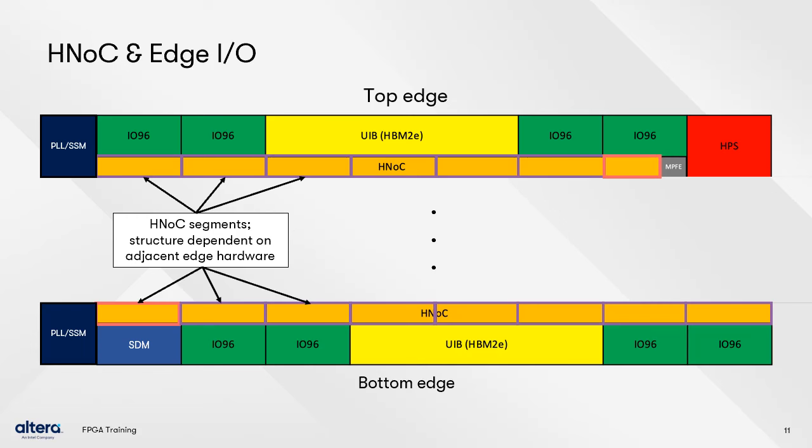A closer look at the top and bottom edges shows how the HNOC is divided up into segments with different features and included resources depending on their adjacent IO periphery resource. The segments are for organization purposes only — adjacent segments still connect to each other and can transfer commands and data left or right across the entire length of the NOC. There are three sub-segments for connecting to the UIB to access HBM2E, and seven segments across the top and bottom, one for each IO96 bank, for accessing external memory interfaces.